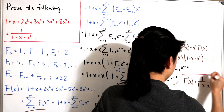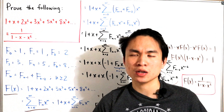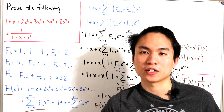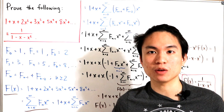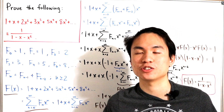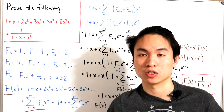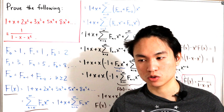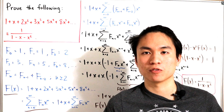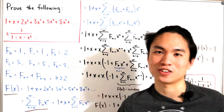Fibonacci numbers have great properties — in particular their relationship with the golden ratio, which ties into Binet's formula for Fibonacci numbers (linked in the description). There's also the existence of Lucas numbers, which I haven't covered yet, but may address in a future video as an extension. Pretty cool stuff overall!